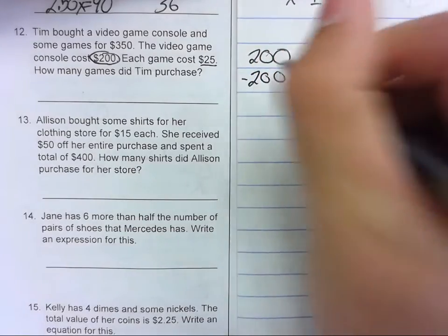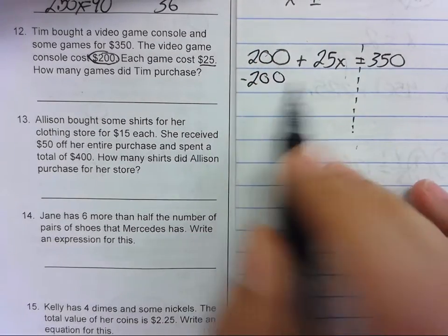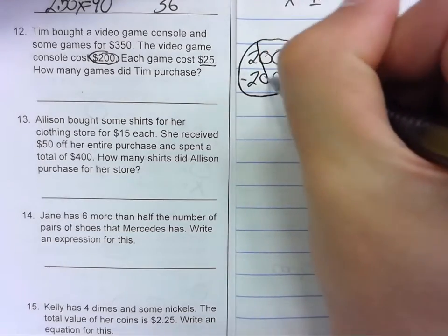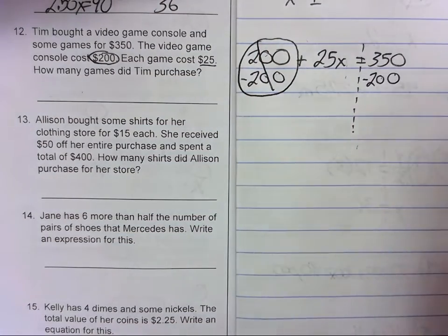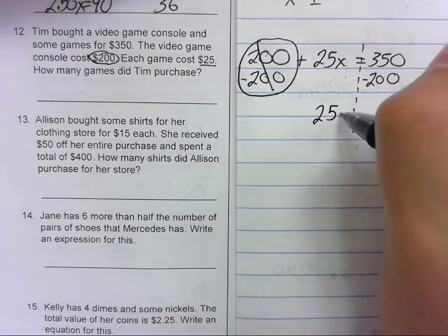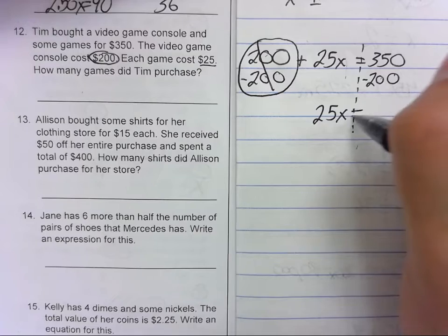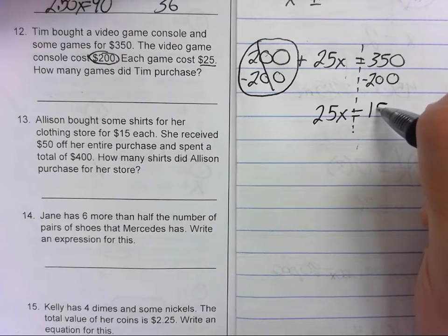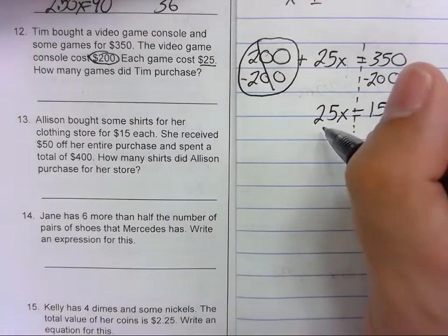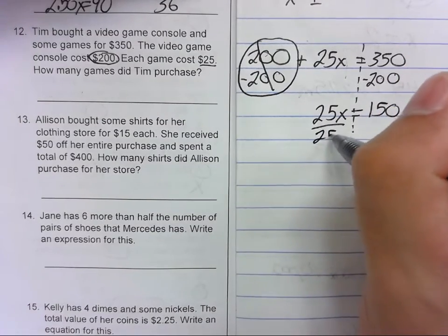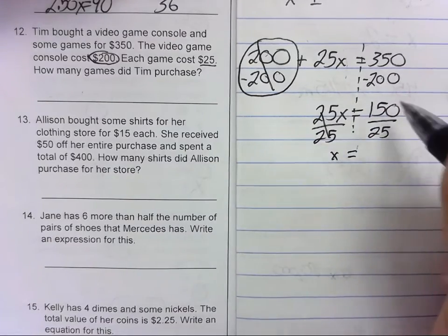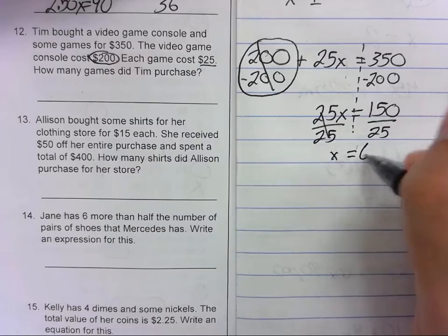So first thing we need to do is balance bar. Now subtract 200. This will create a zero pair. Subtract 200 over here. Bring everything down. 25x equals 150. Divide each side by 25 to get the variable by itself, and x equals 150 divided by 25 is 6.